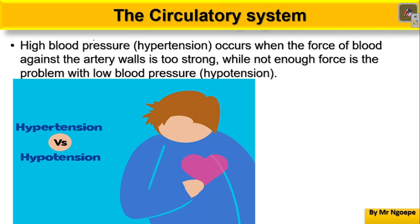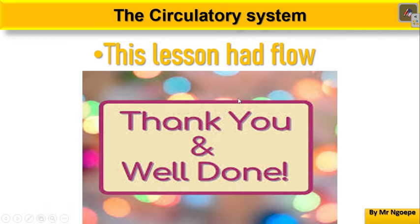Two more disorders: high blood pressure, also known as hypertension, occurs when the force of blood against the walls of your arteries is too strong — higher than normal. When blood is pumped at a force higher than normal, it exerts a higher-than-normal force on your arterial walls. Low blood pressure, or hypotension, is when the force at which blood is pumped out of the left side of your heart is lower than normal. That is your circulatory system and its most common disorders. Leave any questions in the comments and I'll be happy to answer them.